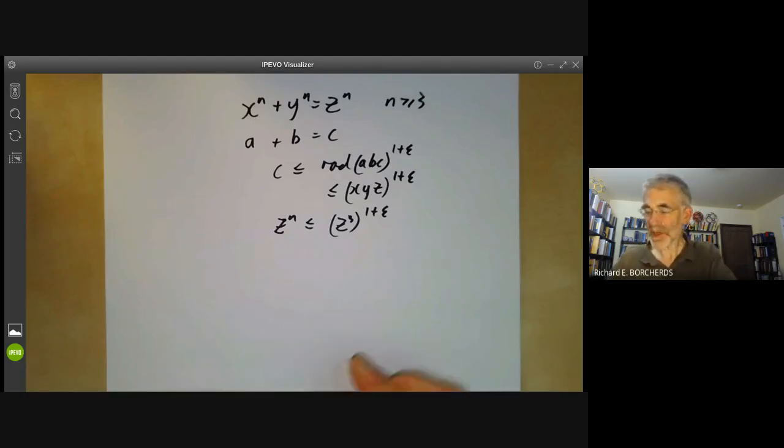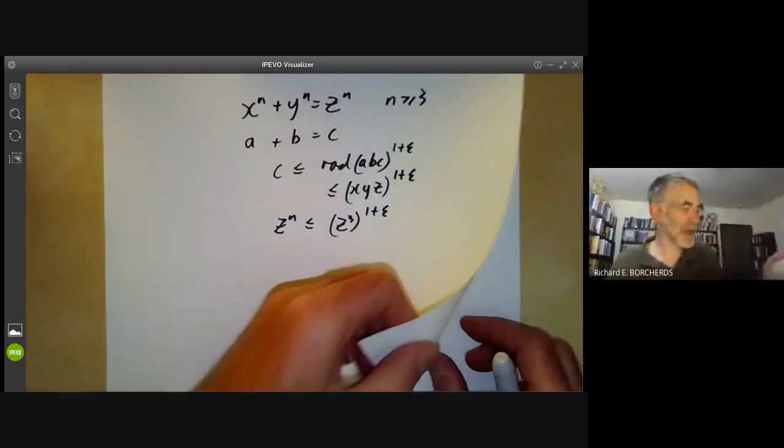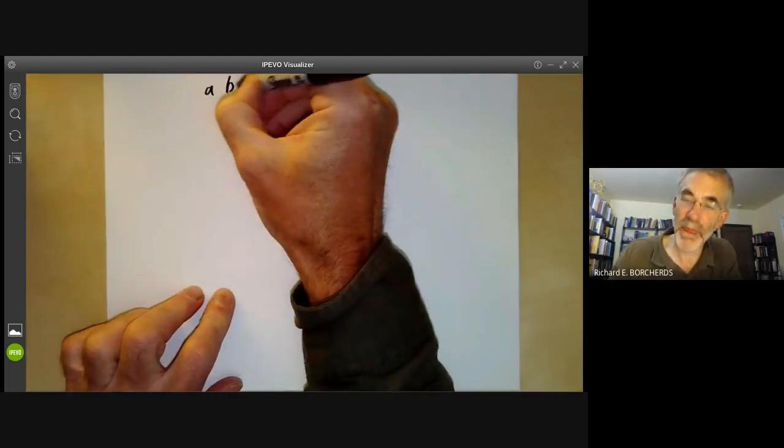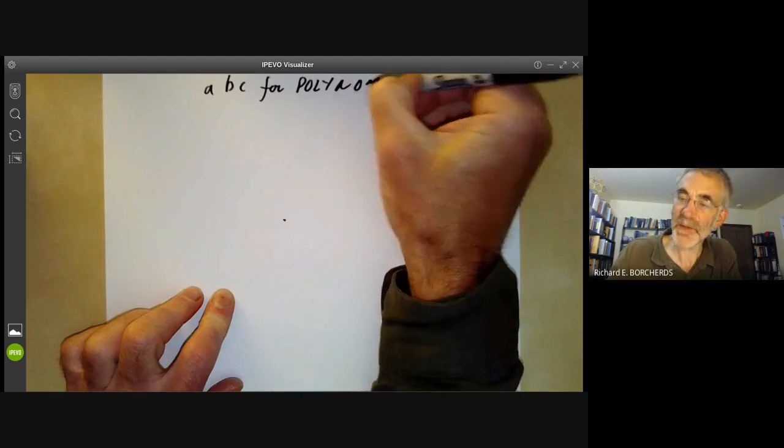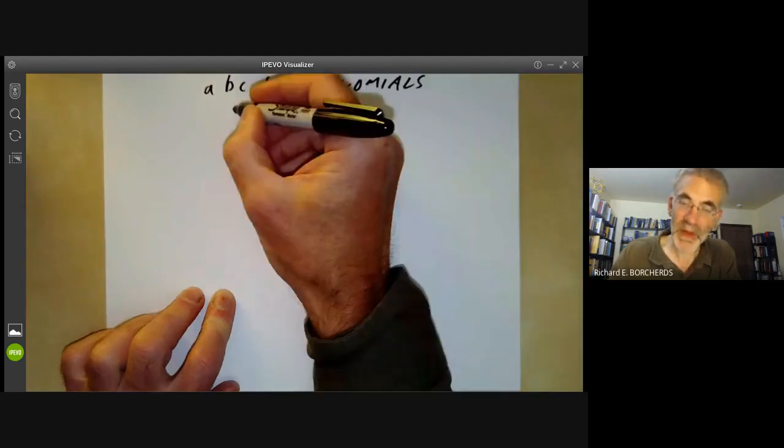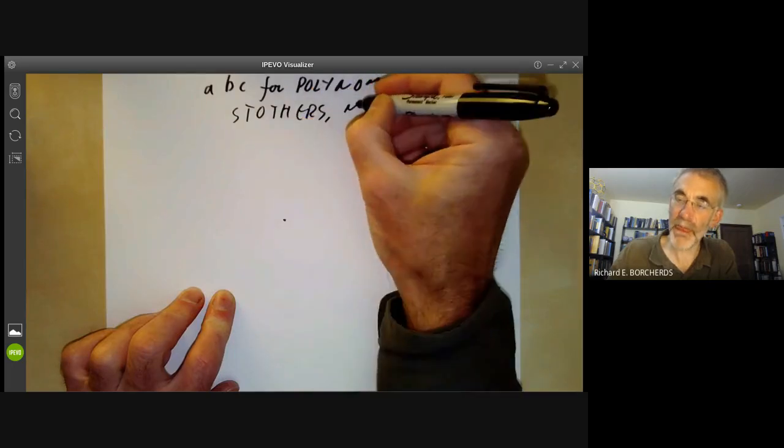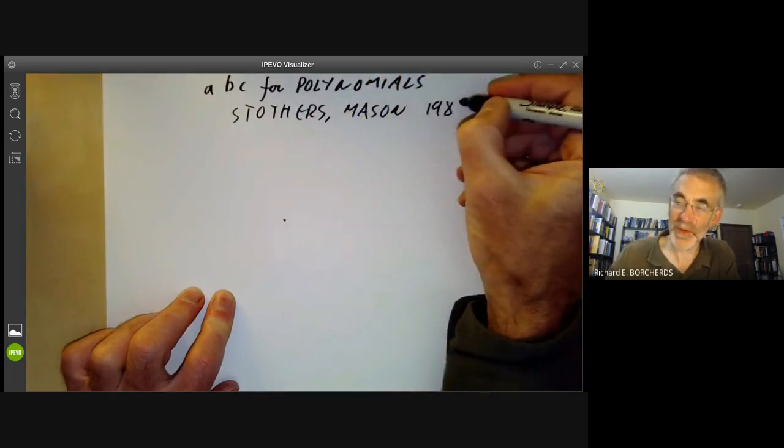So what I'm going to do now is to show you how to prove the ABC conjecture in a slightly different version. This is the ABC for polynomials. And this was proved by Stothers and Mason around about 1980 or 81 or something.